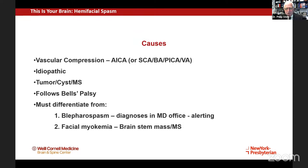What does it mean to have hemifacial spasm, and what are the causes? This is most commonly related to vascular compression. Several blood vessels can be involved — the posterior inferior cerebellar artery and the anterior inferior cerebellar artery — but there can also be a large looping vertebral artery or basilar artery pushing on what is called the root entry zone, the area where the nerve enters into the brainstem. There can also be idiopathic hemifacial spasm where we don't really know what the causes are.